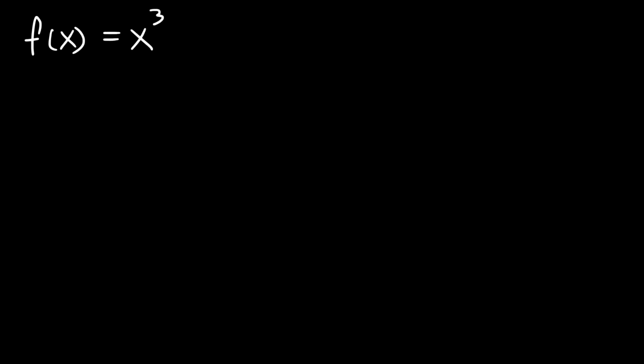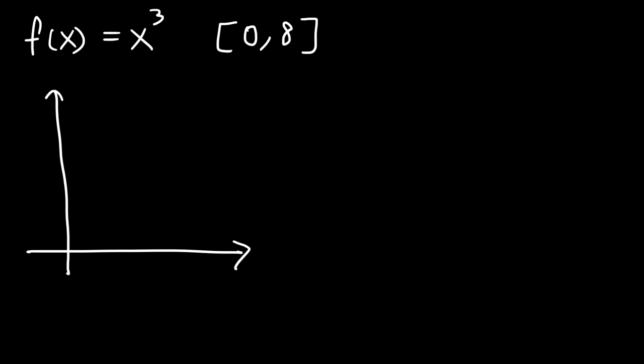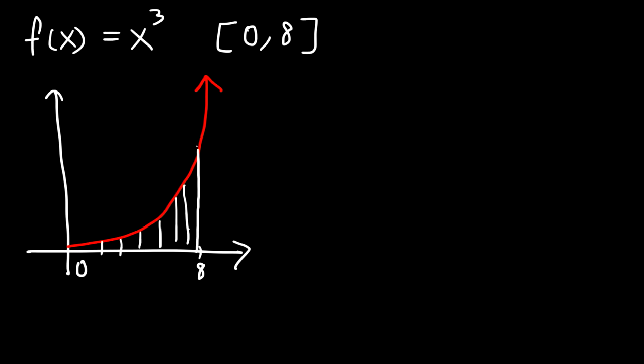In this video we're going to focus on finding the area using the limit definition. So let's say if we have the function x cubed and we want to find the area of the shaded region between the x-axis and the curve over the closed interval from 0 to 8. Let's draw a picture. x cubed on the right side looks like this, and from 0 to 8 we want to find the area of the shaded region. How can we do so using the limit definition?